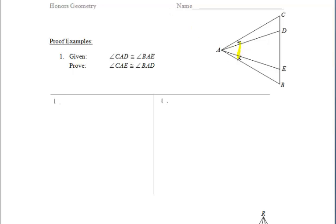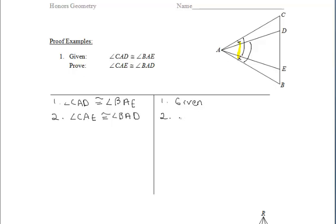Similar to the chart example we saw on the last page, we notice we have angle DAE in between those two other angles. We cannot make the angles we already have any smaller, but we can make them larger if we add on that yellow angle that's in between both of them. So if we add the yellow angle to angle CAD, we end up with angle CAE, and if we add the yellow angle to angle BAE, we end up with angle BAD. Therefore, since the smaller angles were congruent and we're adding on the same angle to both, we can say that angles CAE and BAD are congruent by the addition property.